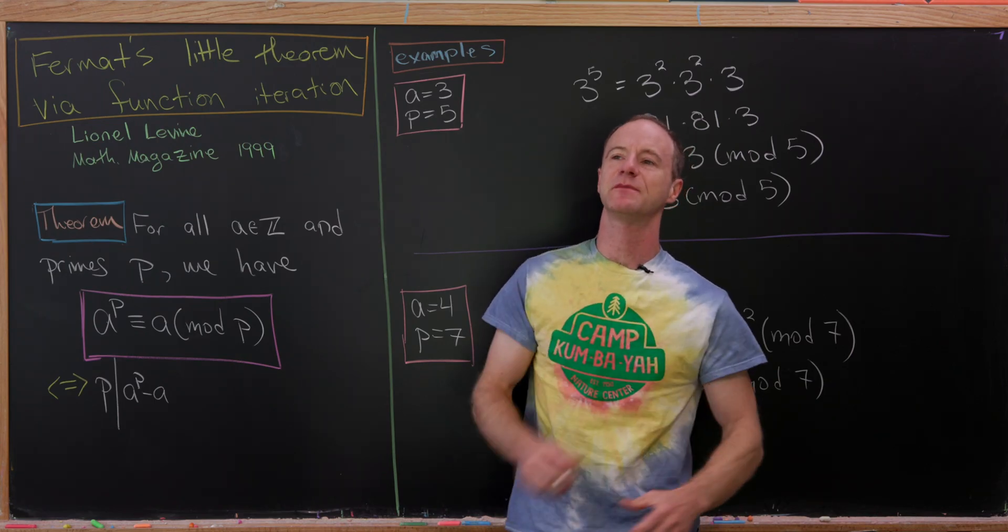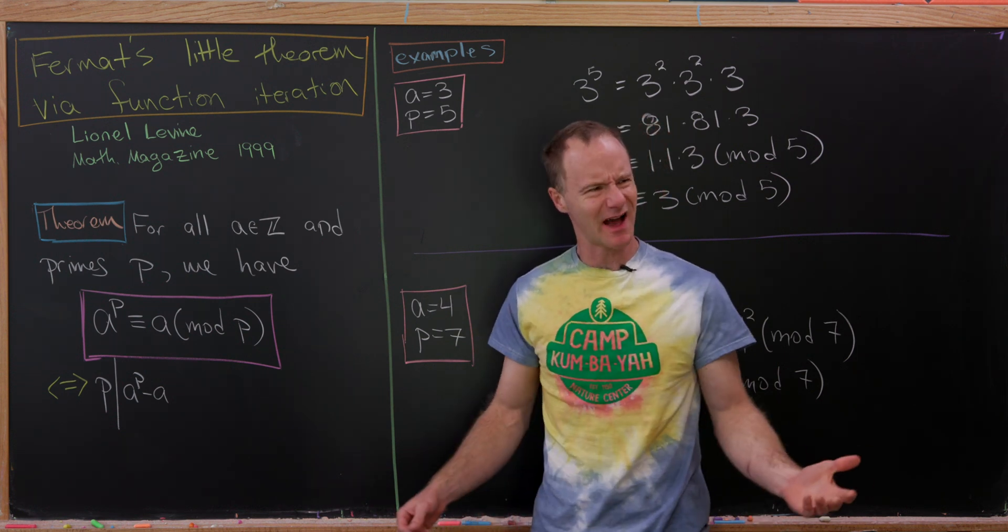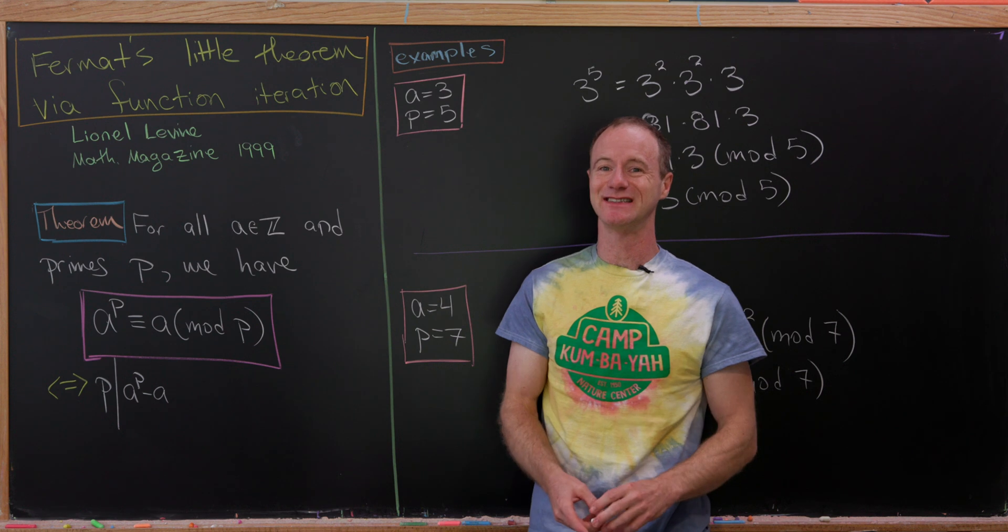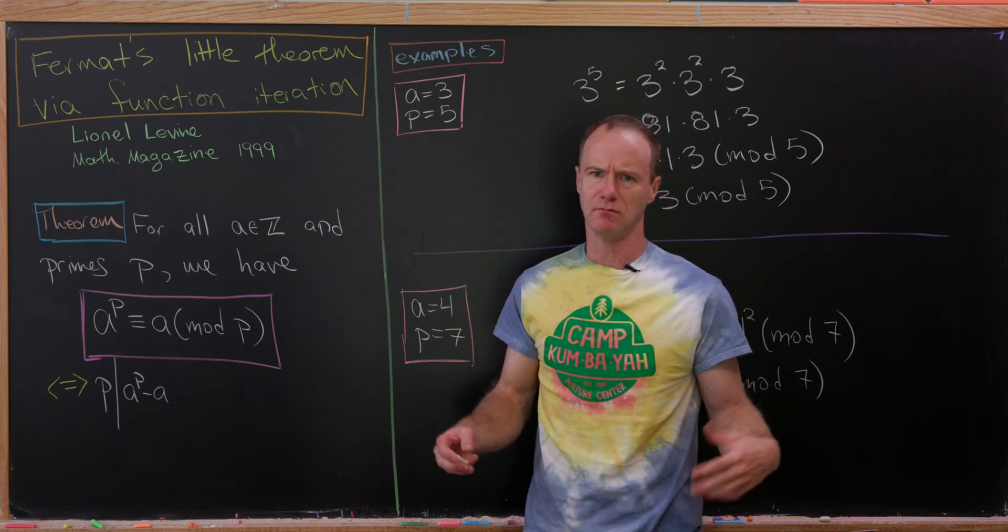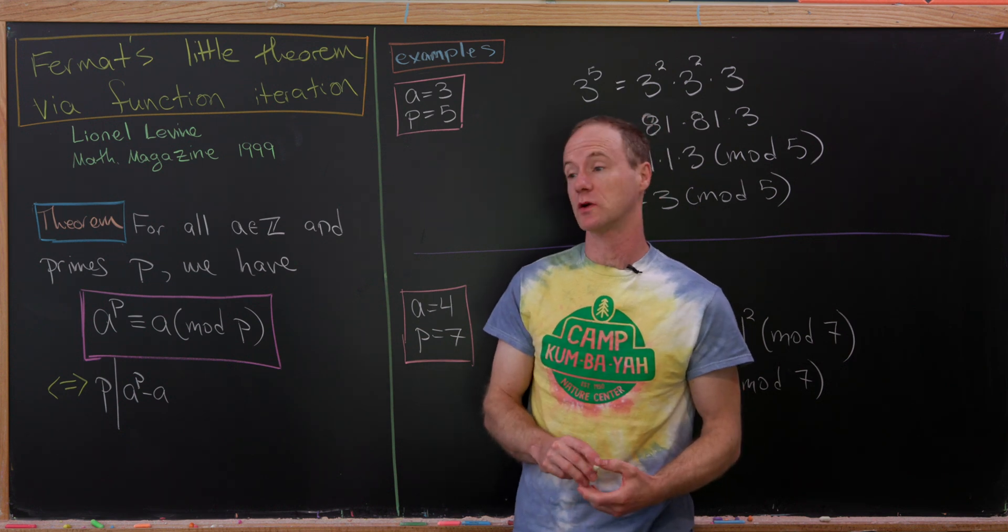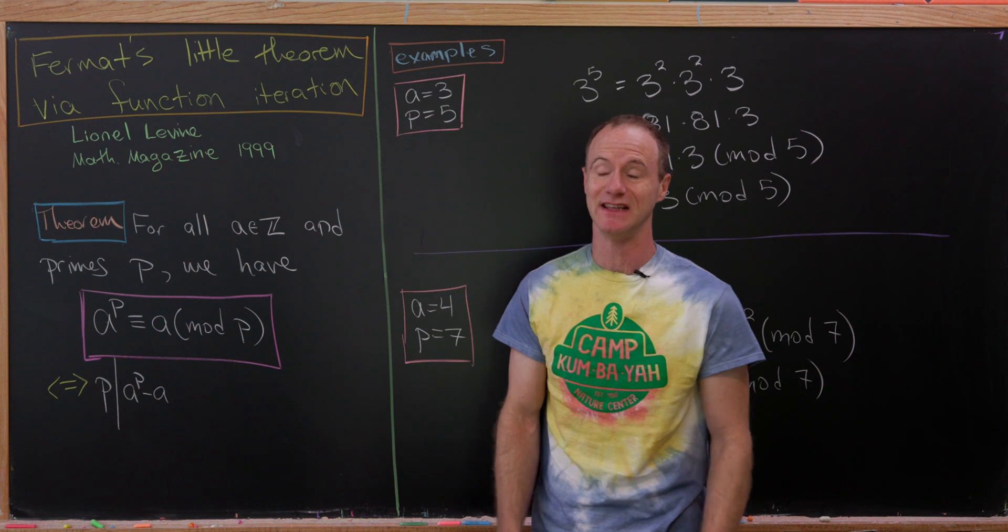I think it's reasonable to say that mathematicians are obsessed with proofs of Fermat's Little Theorem. I think there are over a hundred distinct proofs of this result. And in fact, in modern times, it's a very important result as it fuels the cryptography that underlies the internet.